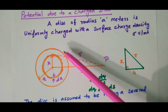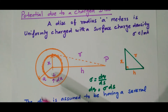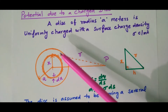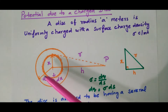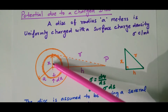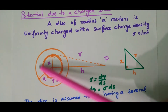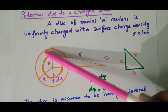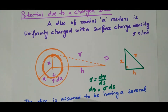The disk with radius A meters is assumed to be having several rings of increasing radius. Starting from 0, there are small rings available, and the radius of each ring keeps on increasing up to the radius of the disk.